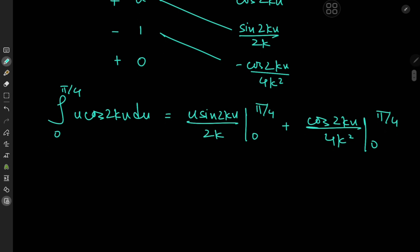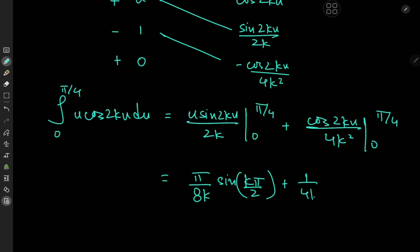As u approaches π/4, the first term gives π/(8k)·sin(kπ/2), and as u approaches 0 that term collapses to 0. For the cosine term we have (1/(4k²))·[cos(kπ/2) − 1], since cos(0) = 1. So that's what the integral evaluates to.